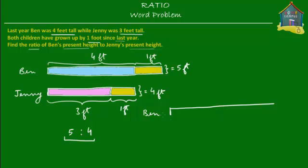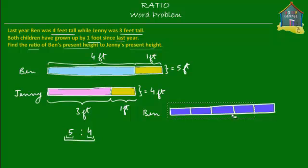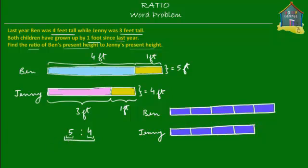I'm going to put Ben's and Jenny's height again on models, this time using this ratio five to four. So what this means is that if Ben's height is taken as five units, then Jenny's height would be equal to four units. If I take this model and cut it up into five equal units — these five blue units are Ben's height. Then Jenny's height would be equal to four of these blocks. This is what this ratio tells me: if Ben's height is five units, then Jenny's height would be four units.